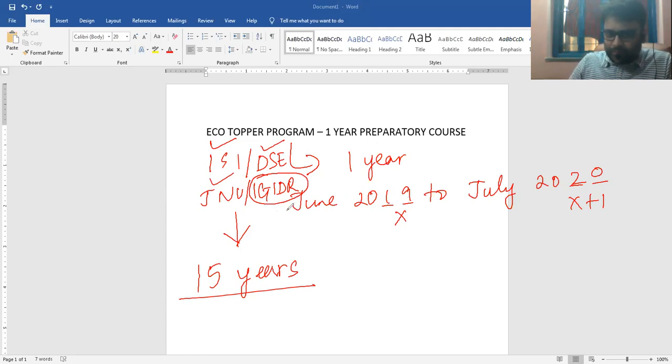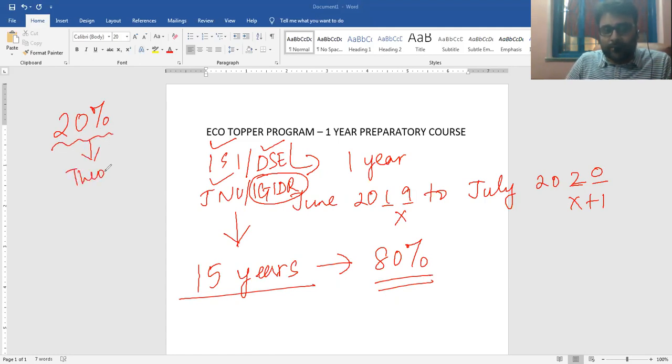Fifteen years of ISI, DSC, and JNU will cover approximately 80% of the one-year course. In the ECO Topper program, I will expect a student to be comfortable with 20% of the class being theory and 80% being problem solving.